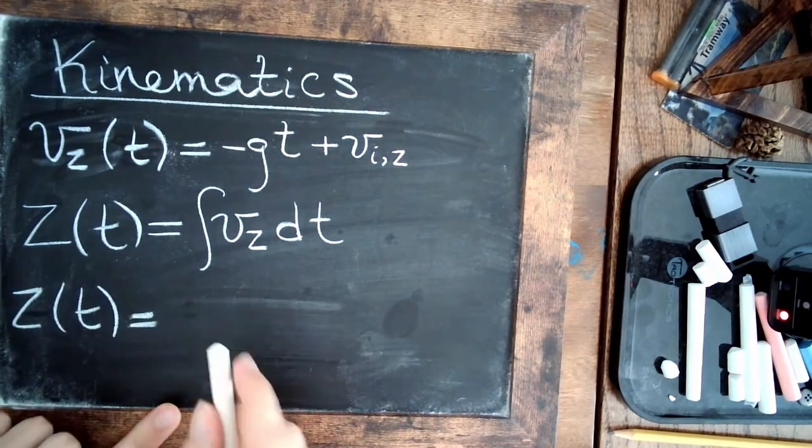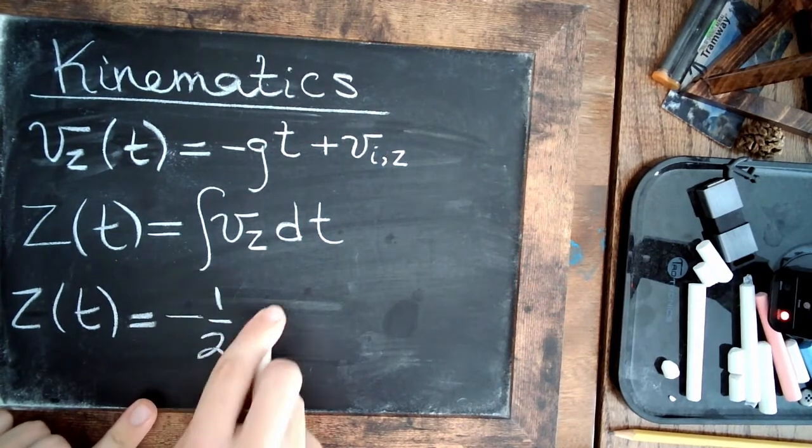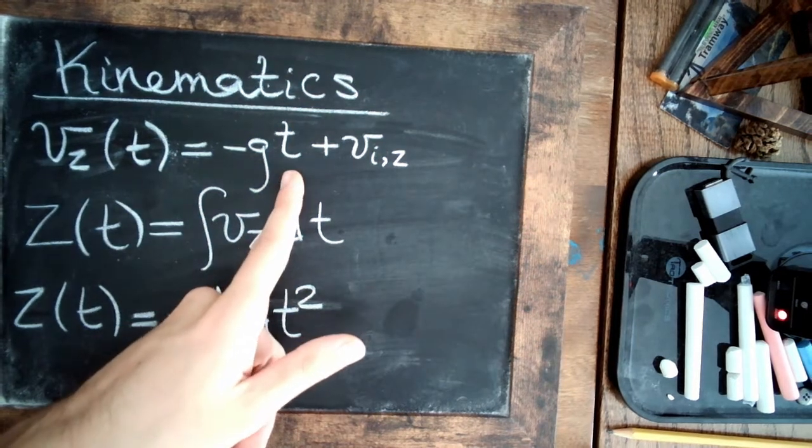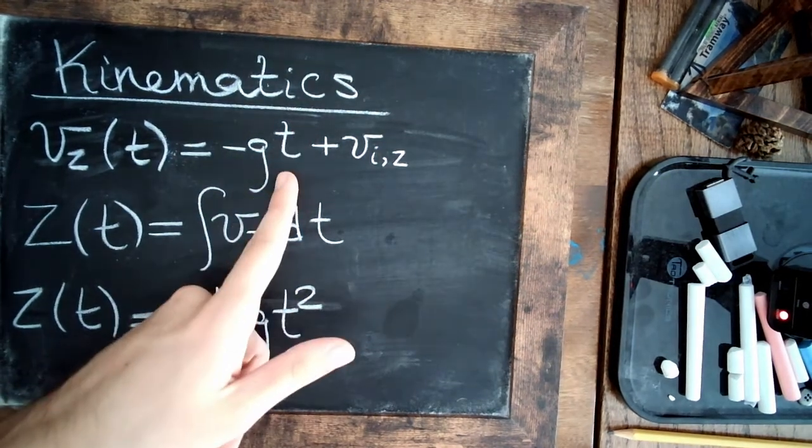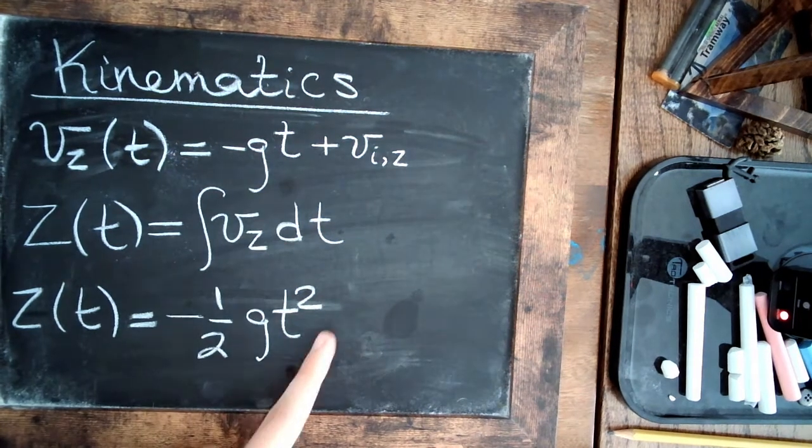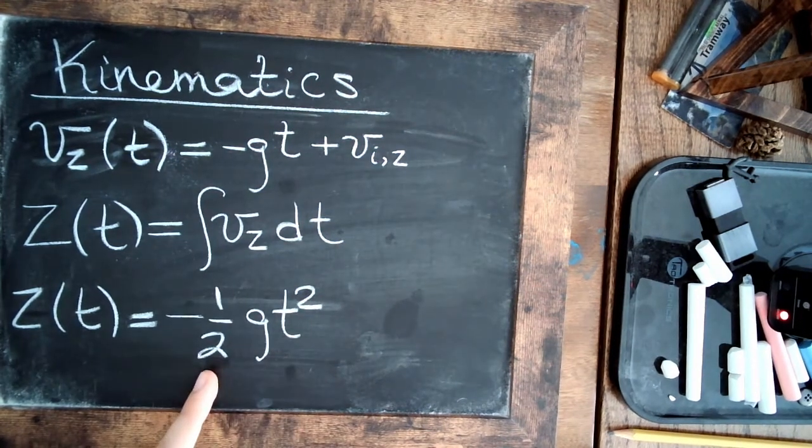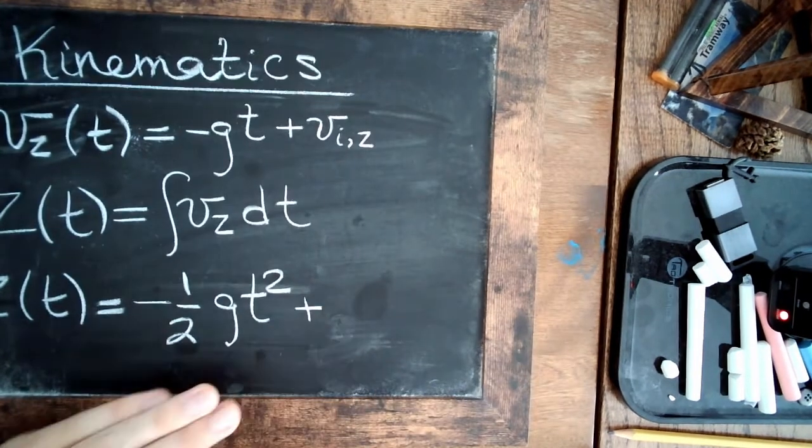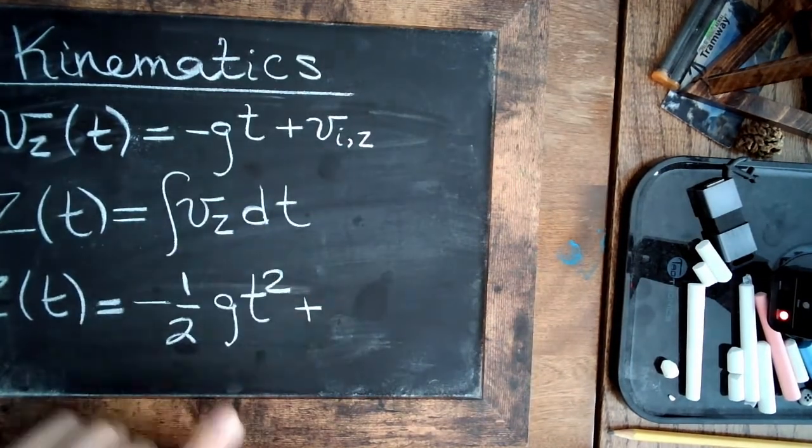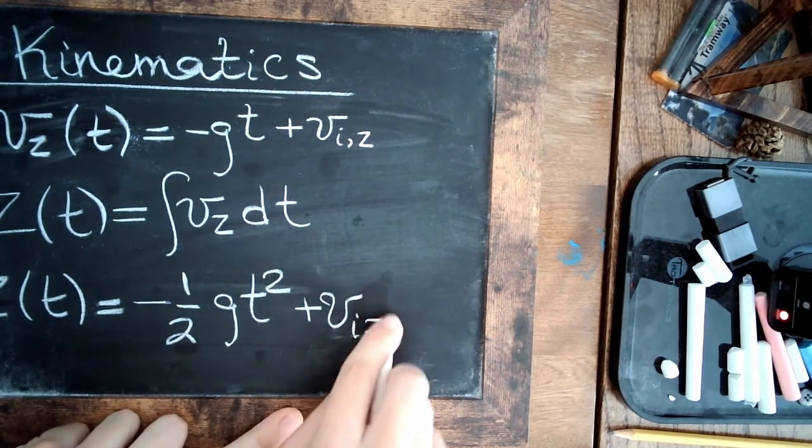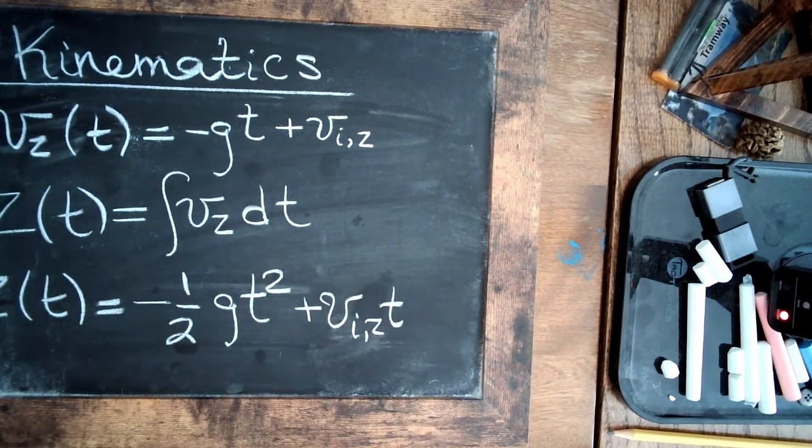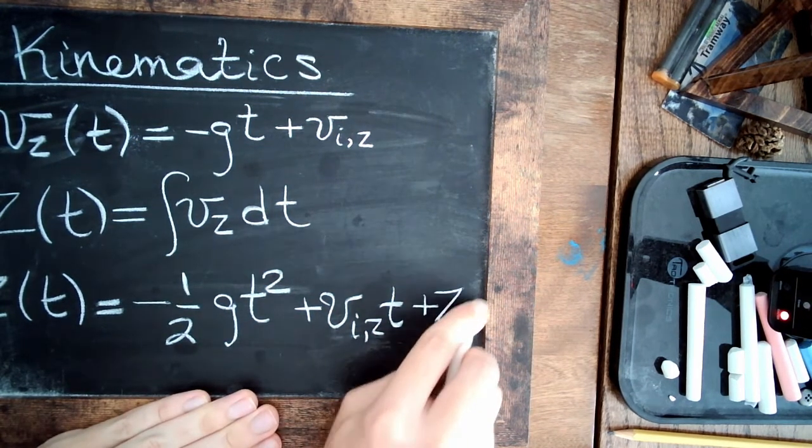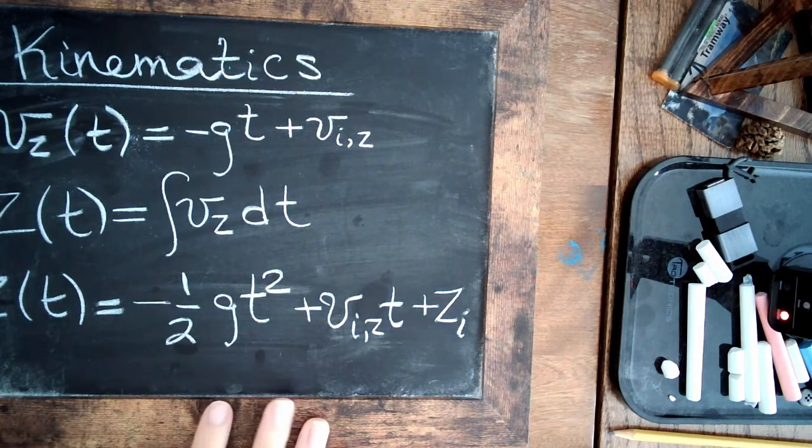minus one half g t squared. So that's how you integrate over time here, you increase the exponent by one from one to two, and then you divide by that exponent. So you get the one half. And then the constant negative g just carries through. Since this was a constant in time, we just bring it down, multiplied by time. And then we have one more constant of integration, which was called zi. So that's the initial z, or the initial height of the ball.